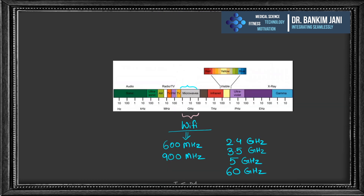Now we talk about the electromagnetic spectrum. There are many types of waves with various frequencies: visible light, infrared, microwave, radio/TV, and on the opposite side, X-rays, gamma rays, ultraviolet, etc. We are interested in the microwave section because all Wi-Fi communication occurs there.